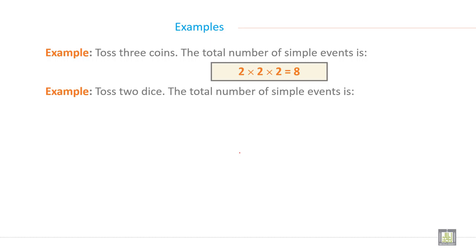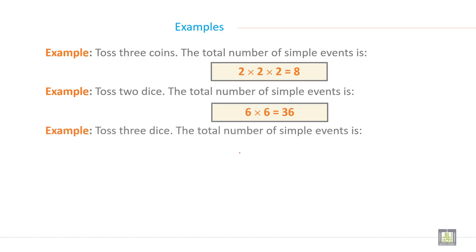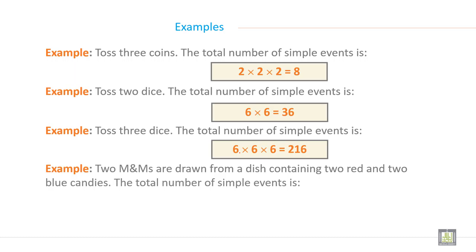Toss 2 dice: the total number of simple events is 6 × 6, which is 36. Toss 3 dice: so 2 items are drawn from a bag containing 2 red and 2 blue candies. The total number of sample events is 4 × 3, which is equal to 12.